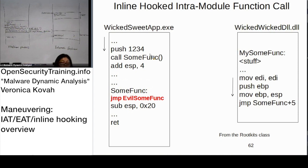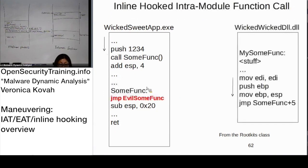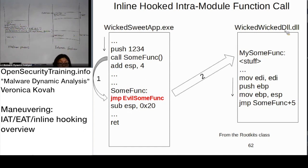If inline hooking takes place, the code calls some function, but at the beginning — where there was a 'move EDI, EDI' — it is changed so that immediately after some function is called, it actually jumps to a malicious function somewhere else. This is inline hooking.